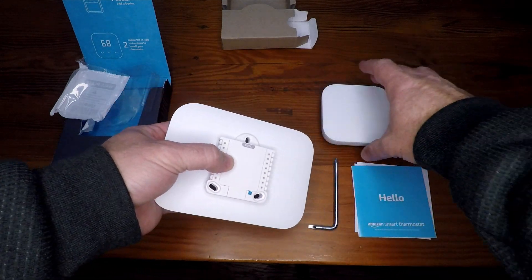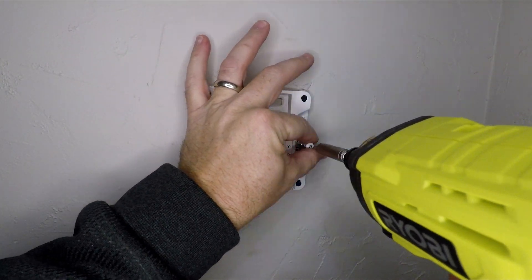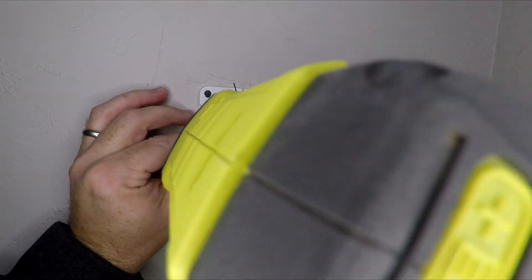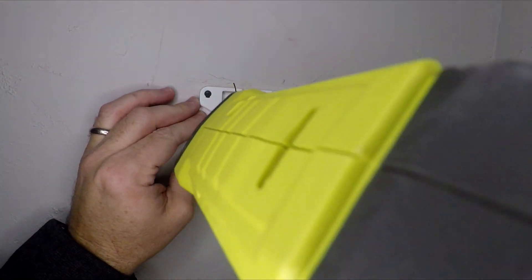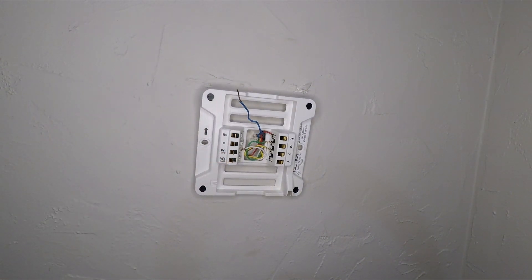If not you can just mount it directly to the wall. First thing, the first step I guess is removing the old Zen thermostat. I have that C wire that I'll be connecting with my new thermostat. I do not expect the buzzing sound with the new Amazon thermostat.